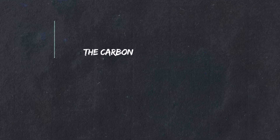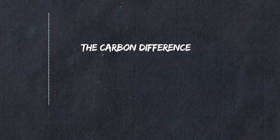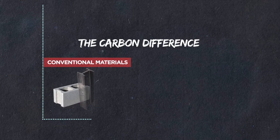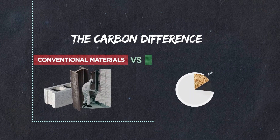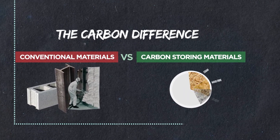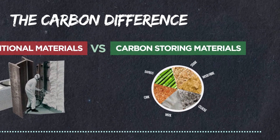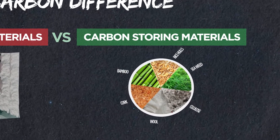Let's look at the carbon cost of different materials. Conventional materials like concrete, steel, and foam versus carbon-storing materials like straw, wood fiber, cellulose, wool, cork, bamboo, rice hulls, and seaweed — there are so many.